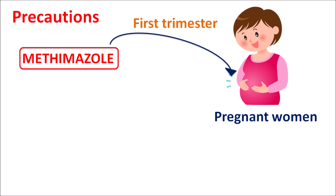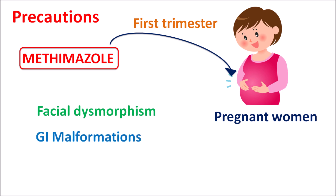Methimazole can reduce organ development, so within the first trimester it should not be used. If a patient becomes pregnant while using methimazole, caution should be taken and an alternative drug should be prescribed to avoid malformations in the fetus. Use of methimazole in the first trimester may produce craniofacial malformations resulting in facial dysmorphism, and even gastrointestinal malformations resulting in incomplete organ development. Therefore, methimazole is strictly contraindicated in pregnant women, particularly in the first trimester.